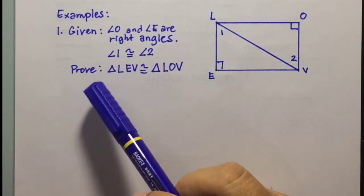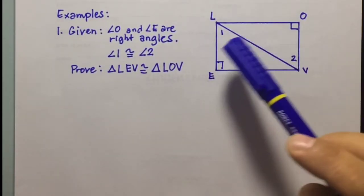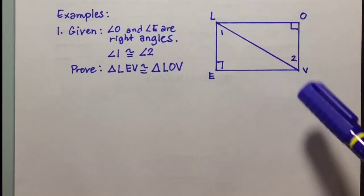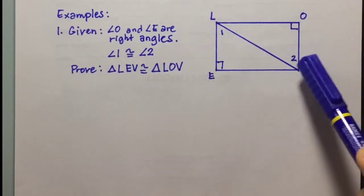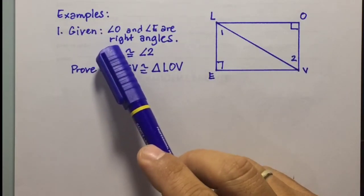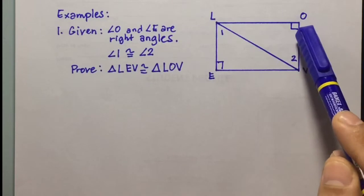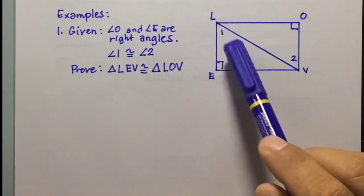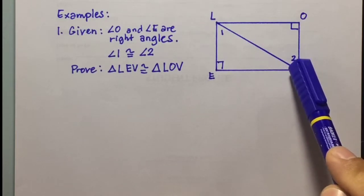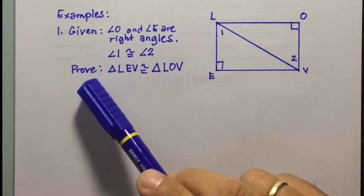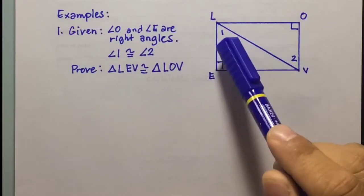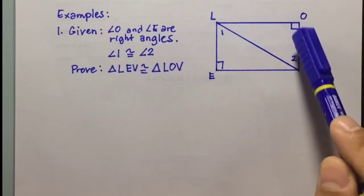Example number one. I have here the figure — this is a rectangle L-O-V-E with angle 1 and angle 2. Given that angle O and angle E are right angles and angle 1 is congruent to angle 2, we're going to prove that triangle L-E-V is congruent to triangle L-O-V.